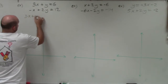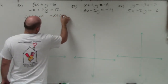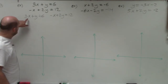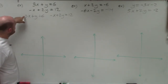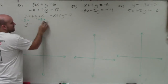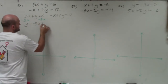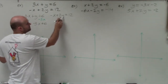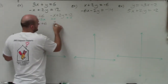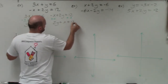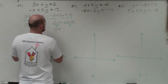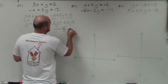I have 3x plus y equals 6, and negative x plus 2y equals 12. To put the first equation in slope-intercept form, I need to solve for y. The variable y is being added by 3x, so I subtract 3x on both sides and get y equals negative 3x plus 6. For the second equation, I add x to both sides, giving me 2y equals x plus 12, then divide by 2 to get y equals x over 2 plus 6.